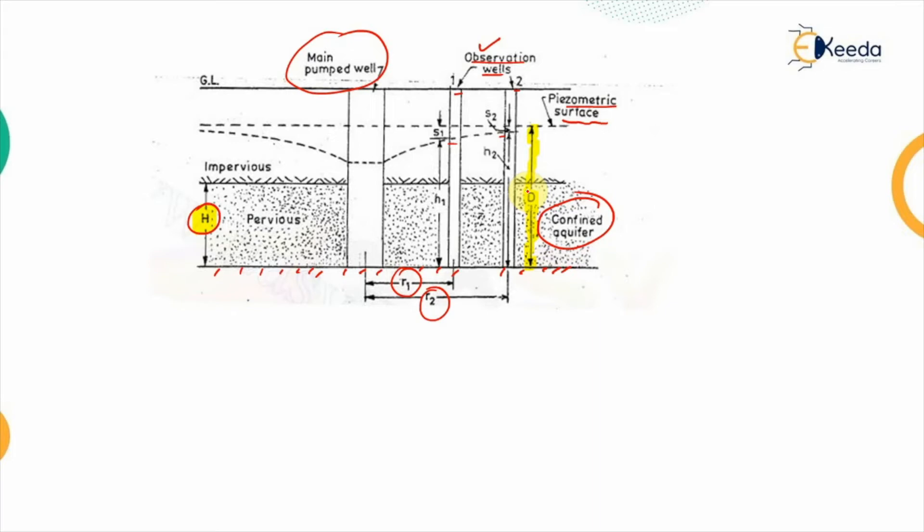Now, again we need to derive the relation for the discharge out of this well. So, at any radial distance r, let's say we are assuming this is the radial distance r.